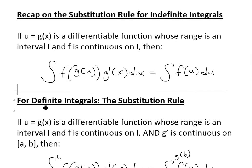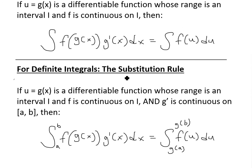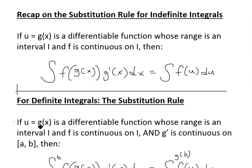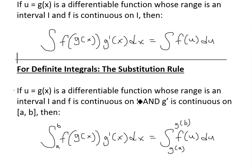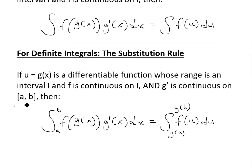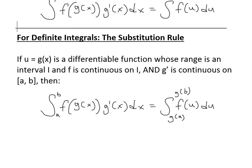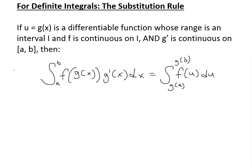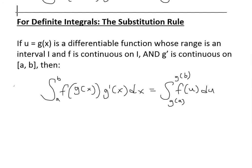When we deal with definite integrals — meaning the integral from one number to another — the substitution rule is very similar. We have the same definition with u = g(x), but additionally g′(x) must be continuous on the interval [a, b]. Then the integral from a to b of f(g(x))·g′(x) dx is equivalent to the integral from g(a) to g(b) of f(u) du. We replace the x-limits a and b by plugging them into u = g(x).